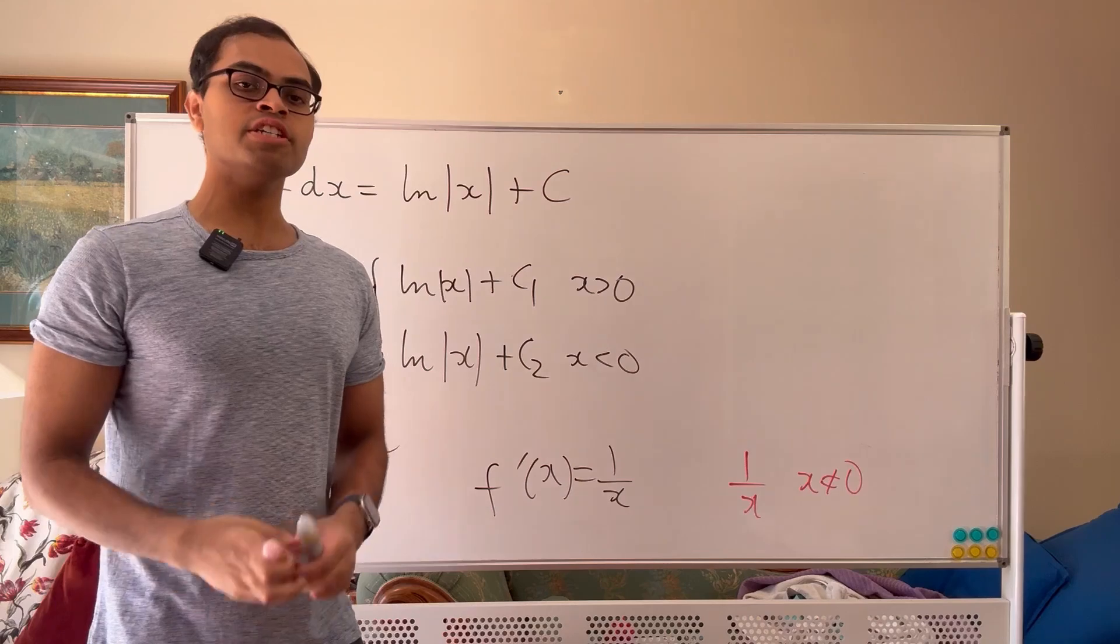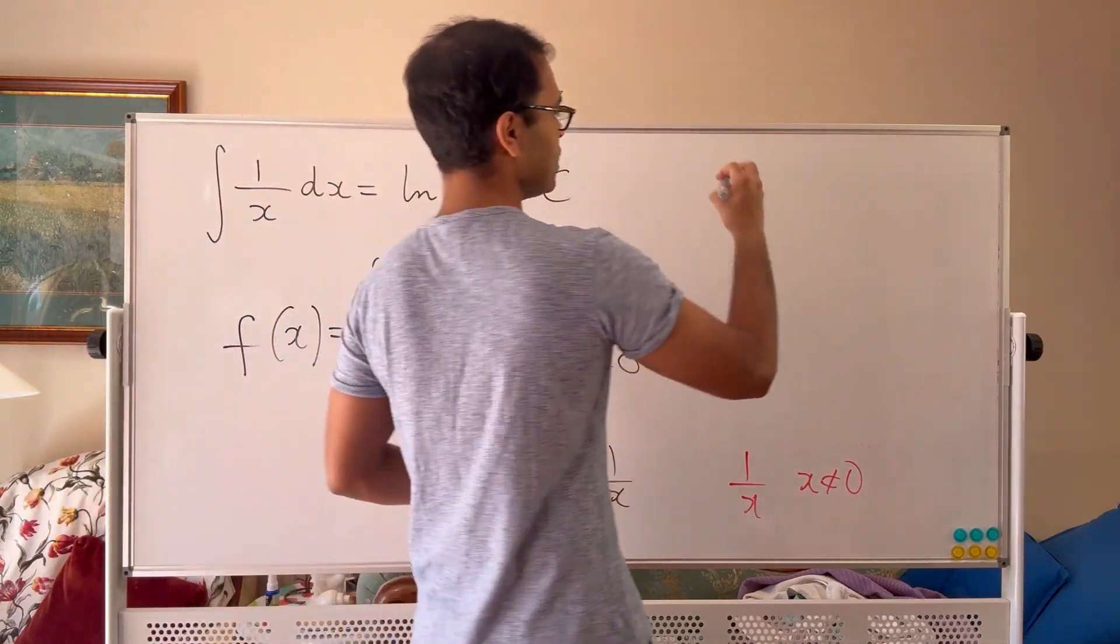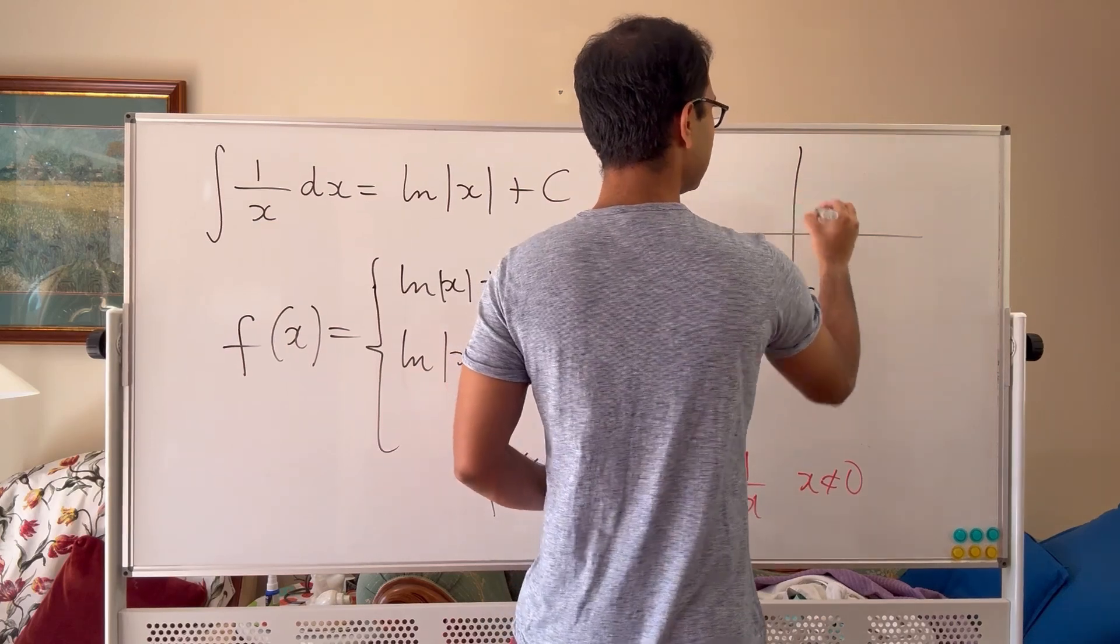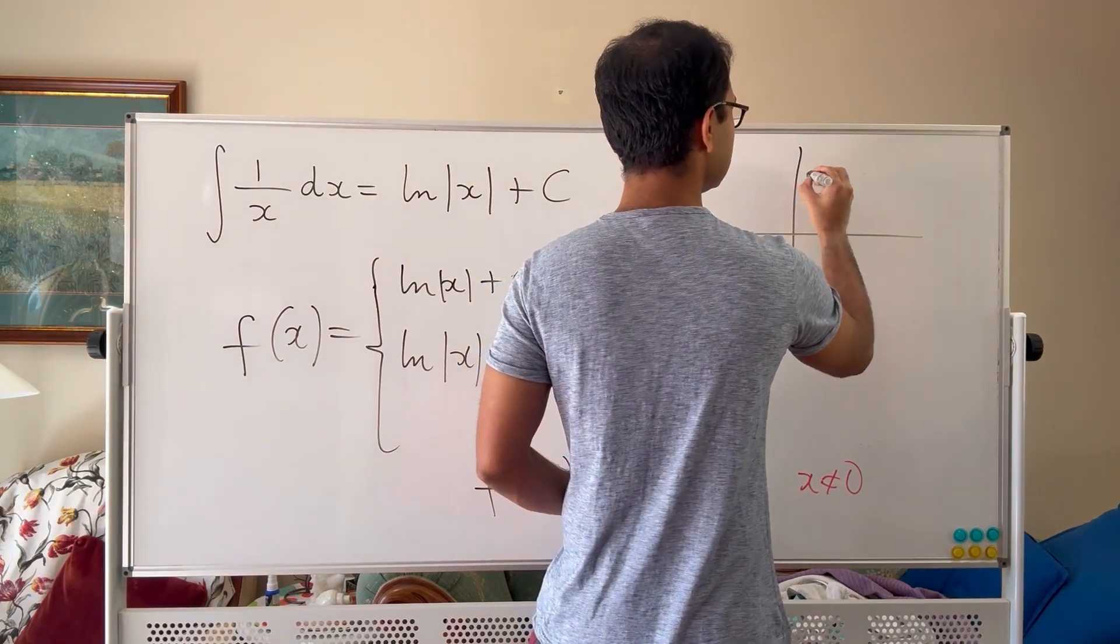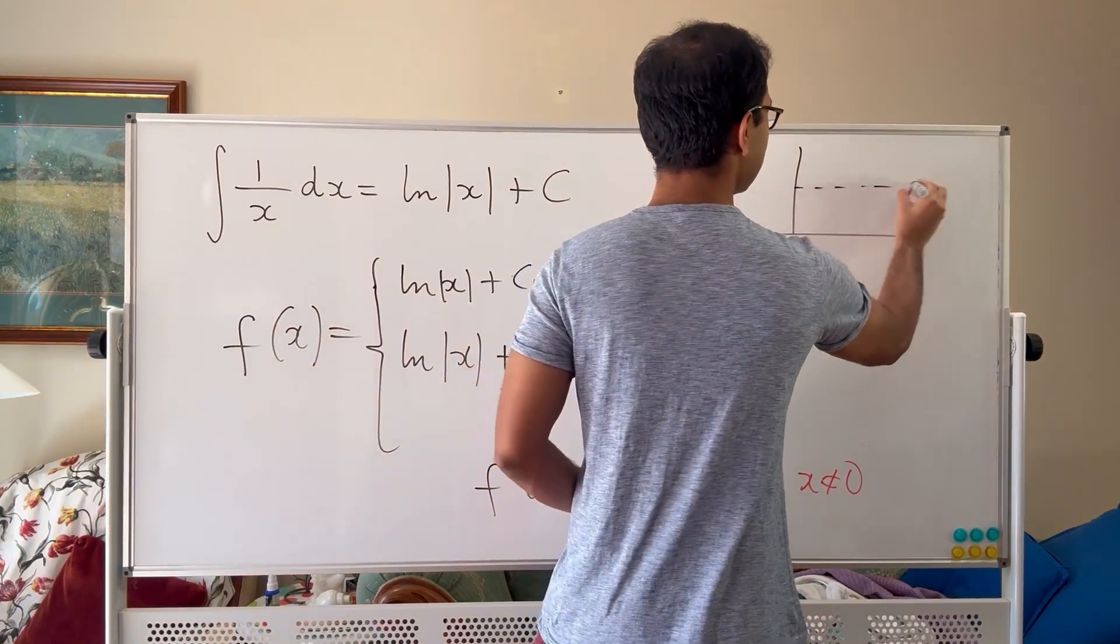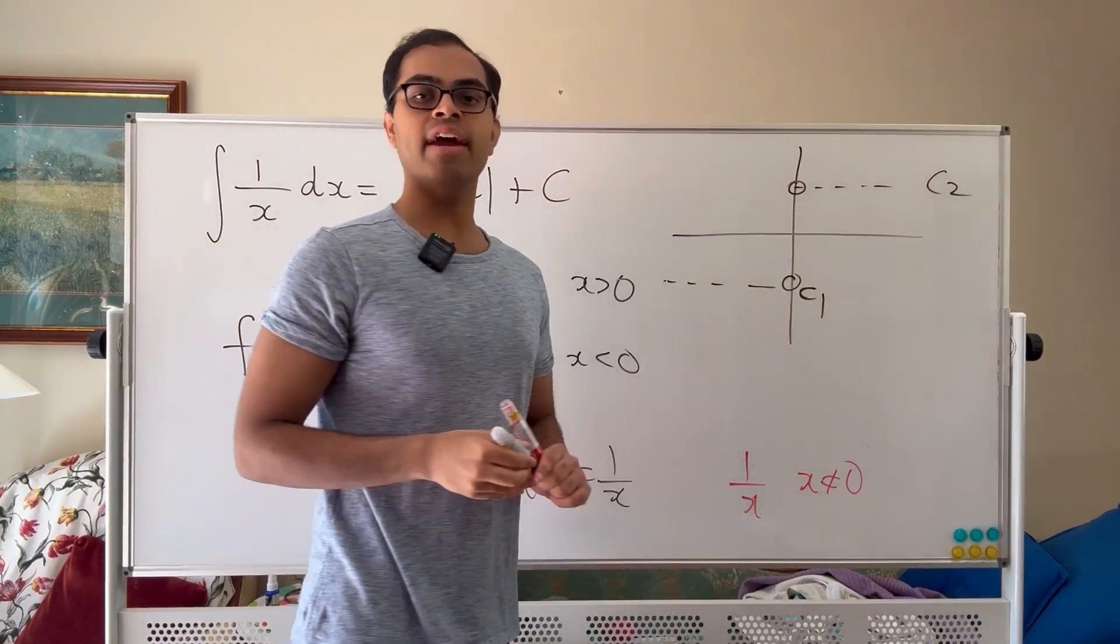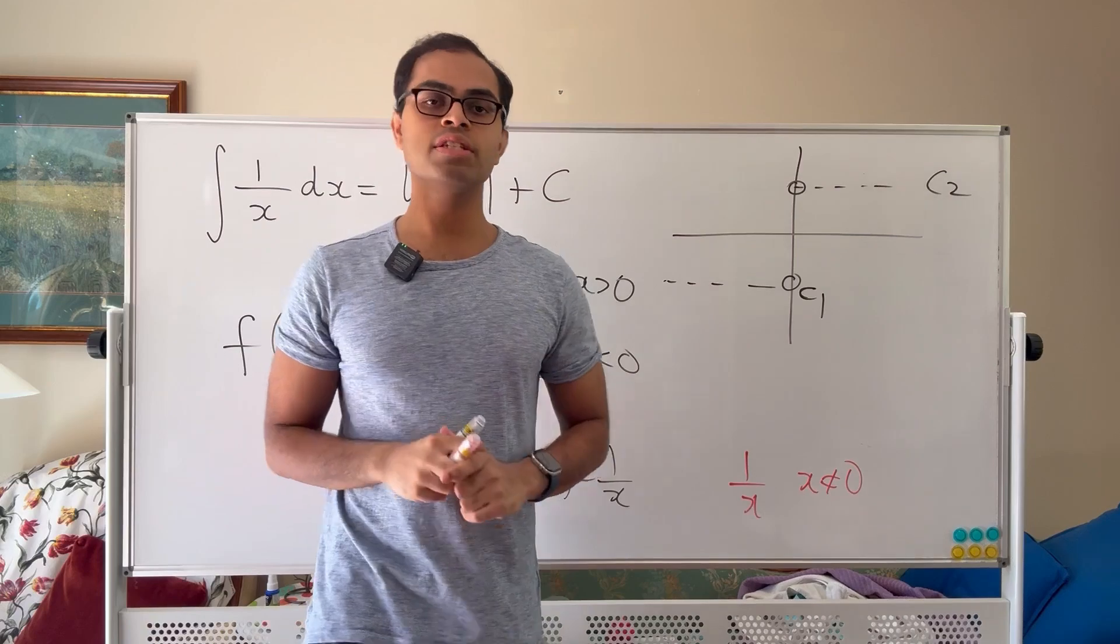The general picture of such a function looks like this: you draw the graph here, you put some constant c1 for example and some constant, another constant c2. There is a hole at 0, so it's defined for x non-zero. Its derivative is 0 but it's not a constant.